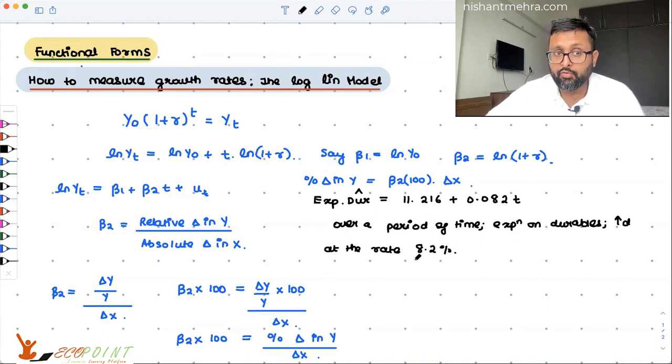So when you are interpreting, when you have log as the dependent variable and this guy as the independent variable without log, then while interpreting beta 2, you have to multiply that beta 2 with 100. That is the only thing for which you have to be careful while interpreting the log-lin model. Other thing is that this is what you have got is the instantaneous rate of growth for that particular time period.